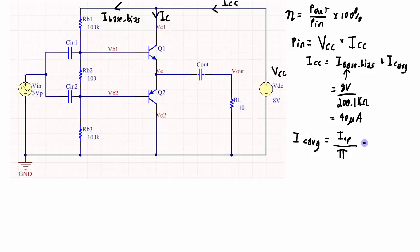So that 3 volt peak output to give us the peak current will be 3 volts divided by the load resistor which in this case is 10 ohms and then divided by pi. And that works out to 95.5 milliamps. 95.5 milliamps compared to 40 microamps is essentially zero. So my ICC is my IC average approximately.